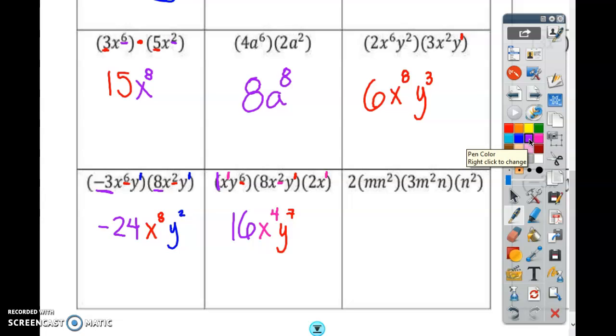The last one. What do I multiply? 2 times 3 times 1. What's 2 times 3? 6 times 1? 6. How many M's do I have? How many M's do I have here? 1. How many M's do I have here? 2. And then no more M's over here. So 1 plus 2? 3. M to the 3rd power.